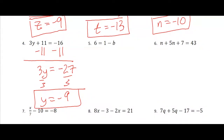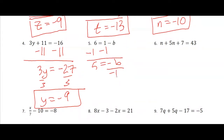Number 5, a little tricky here. I'm going to start by subtracting 1 on both sides, so you get 5 equals negative b. Now, to get rid of that negative sign, you have two options: multiply both sides by negative 1 or divide both sides by negative 1. I'm going to divide, and so I end up with b equals negative 5.